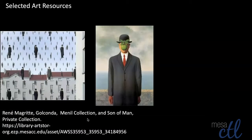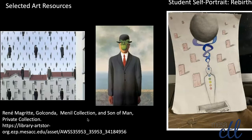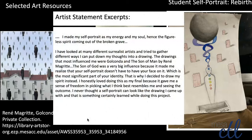Another example is a student who was particularly inspired by Magritte. He took this and made it into a work called 'Rebirth,' visible on the right hand side. He did a sophisticated analysis of how the idea of identity can be drawn into something that does not necessarily look representational but rather has a symbolic element to it.